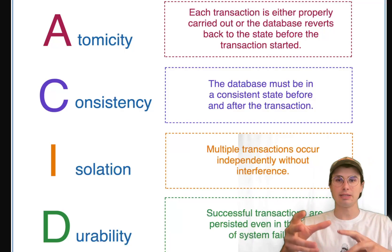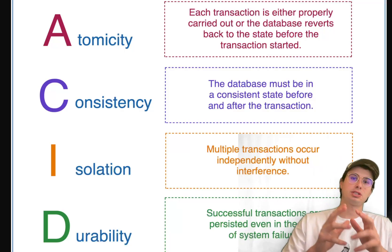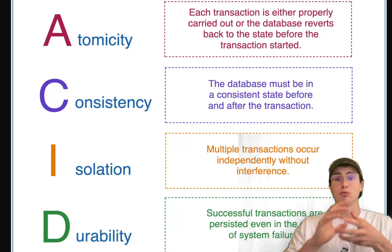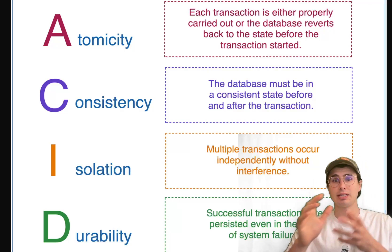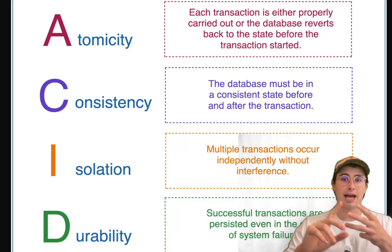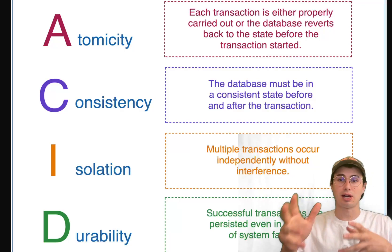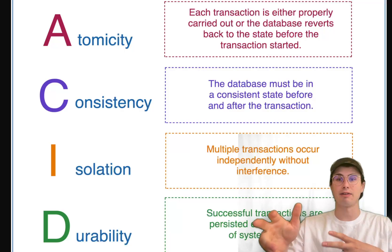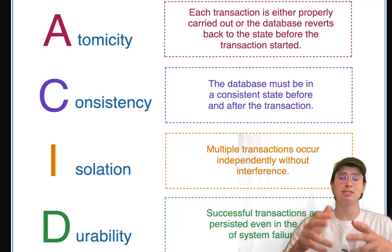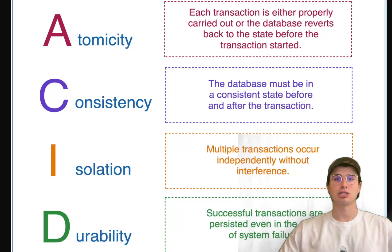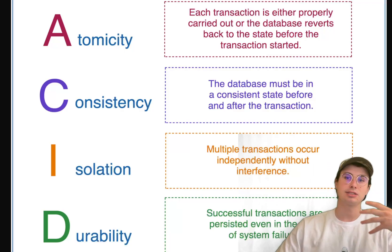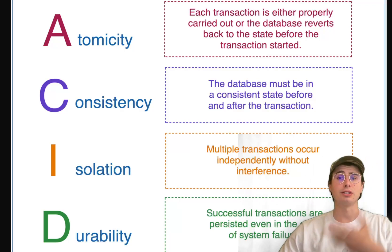Then fourth, we have durability, and that is assuring that once a transaction has been committed, it will remain so, so that that transaction will continue to be valid even in the event of a power loss, crash, error. And this is often ensured by storing changes in a non-volatile memory database. So having our separate database that is keeping track of all of your changes or replicating it to another database as well.